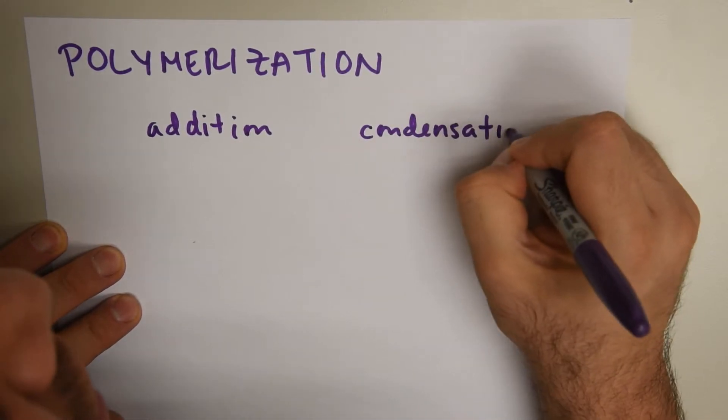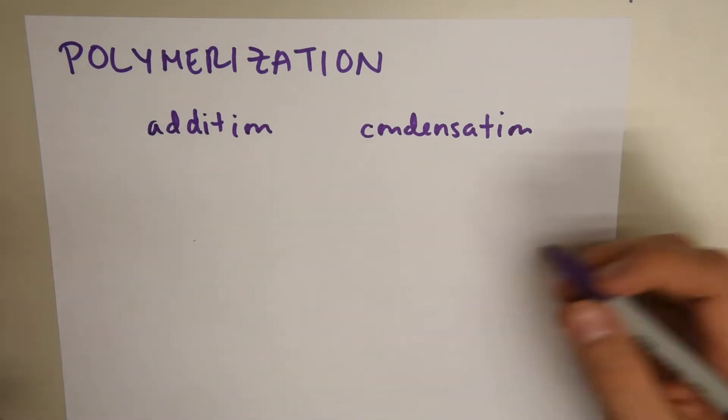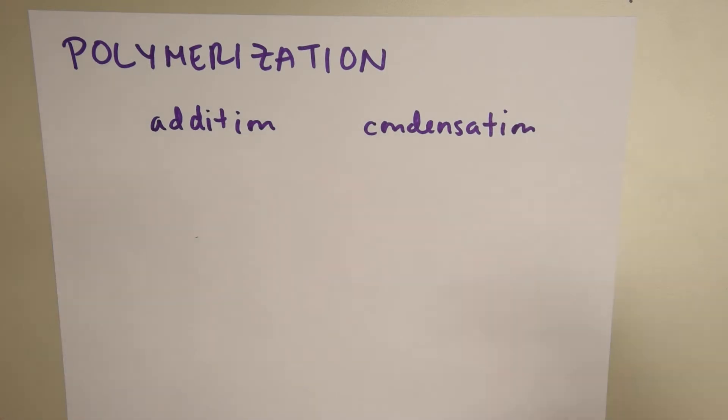Condensation reactions usually take place when you add the monomers, and then you get a side product. You get a polymer and a side product. Addition, the monomers join together, and there's no side product.